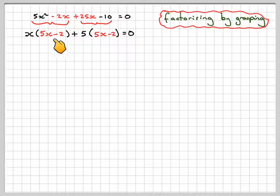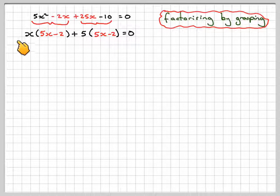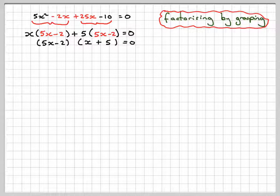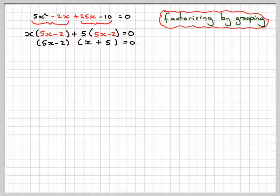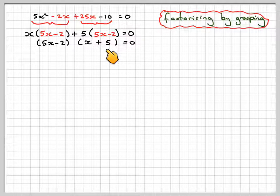So if you've done this procedure correctly, here and here you should always end up with the same thing. So they therefore are common factors and can come out, so we get 5x minus 2 brackets x plus 5 is equal to 0. So if these two are equal to 0, multiply together, either that's 0 or this is 0.